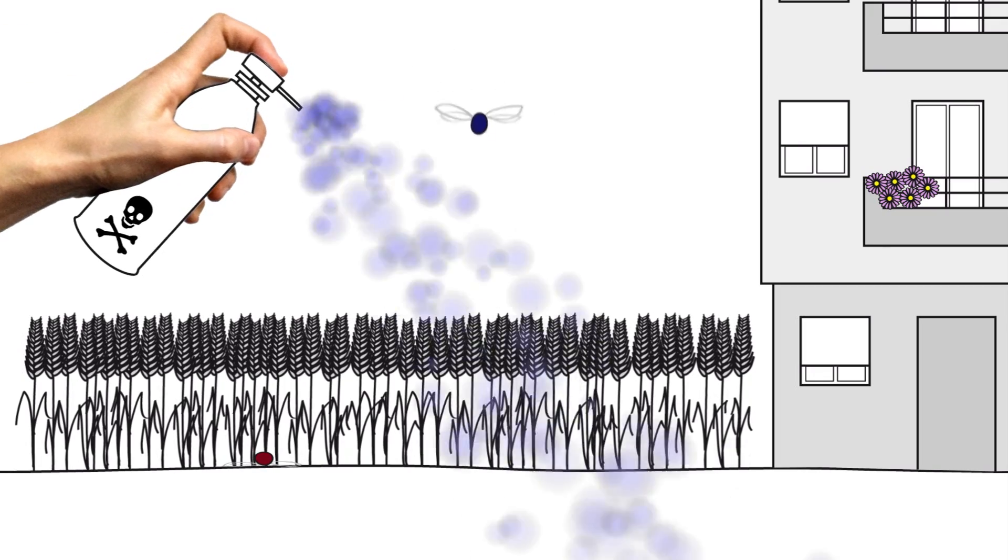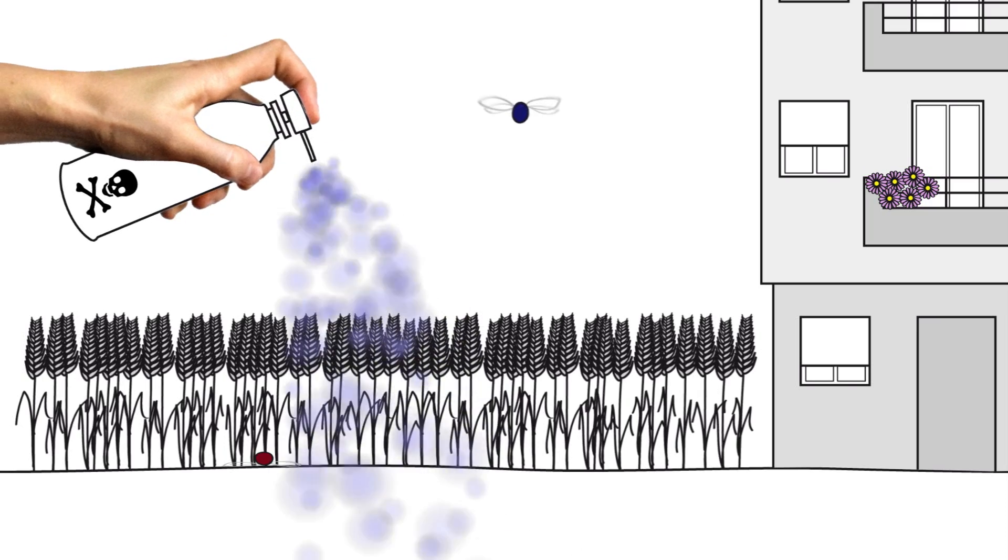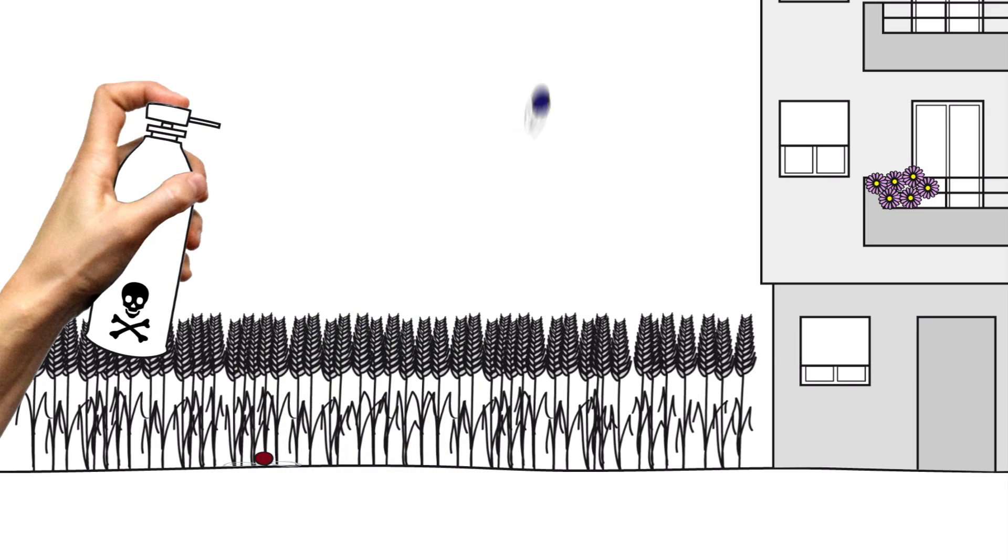On top of this, we use pesticides on our crops, intoxicating the few species that can adapt to them.